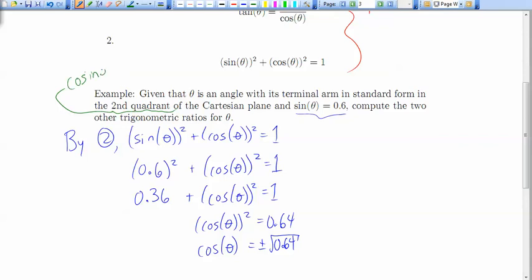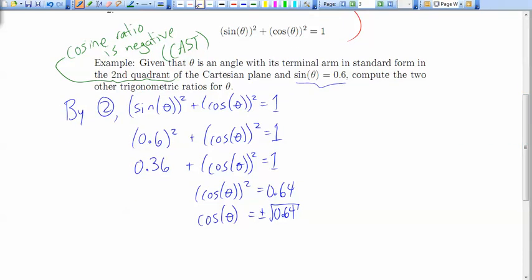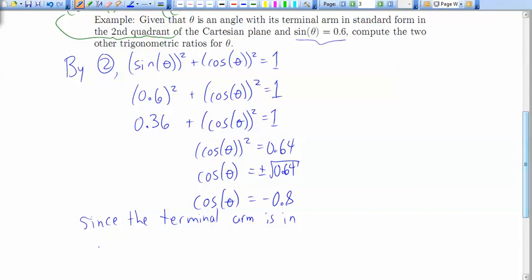So we're going to use that fact right now, and it means that we're going to take cosine of theta is equal to negative 0.8. And that's since the terminal arm is in the second quadrant.